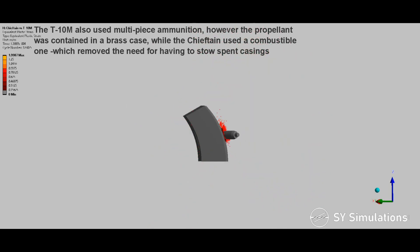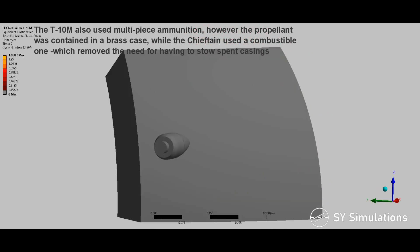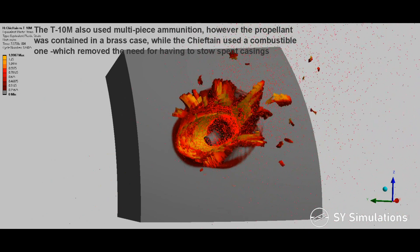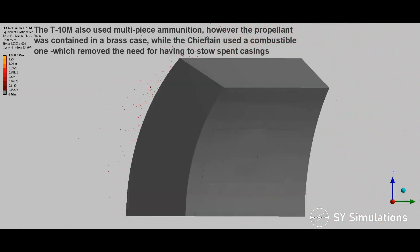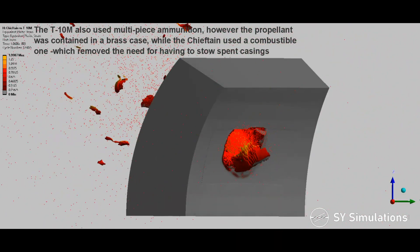The T-10M also used multi-piece ammunition, however the propellant was contained in a brass case, while the Chieftain used a combustible one, which removed the need for having to stow spent casings.